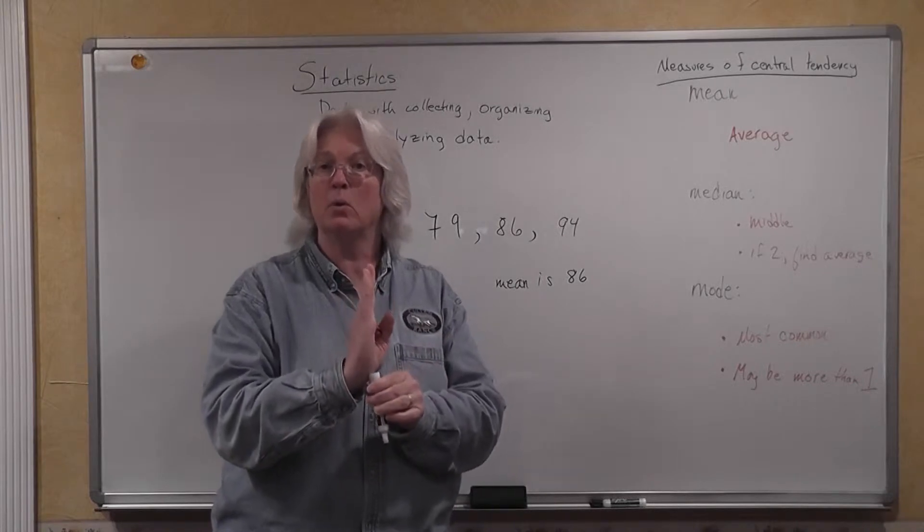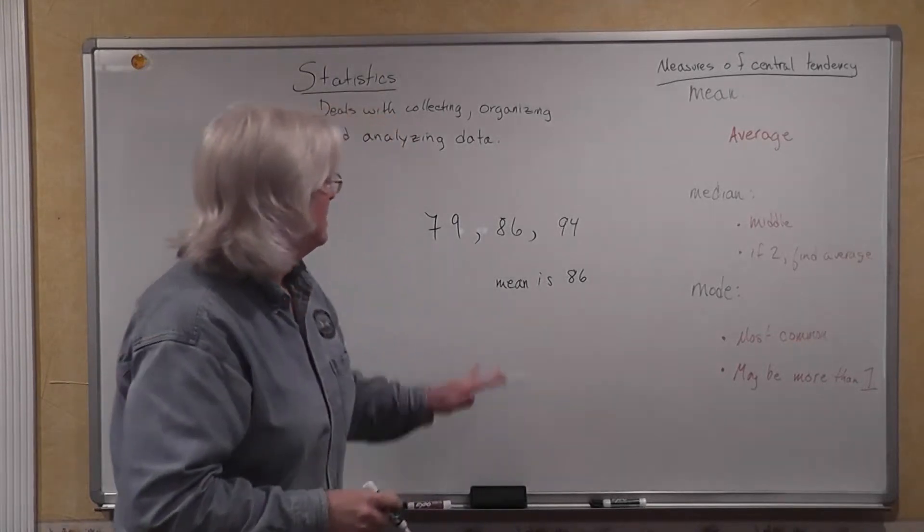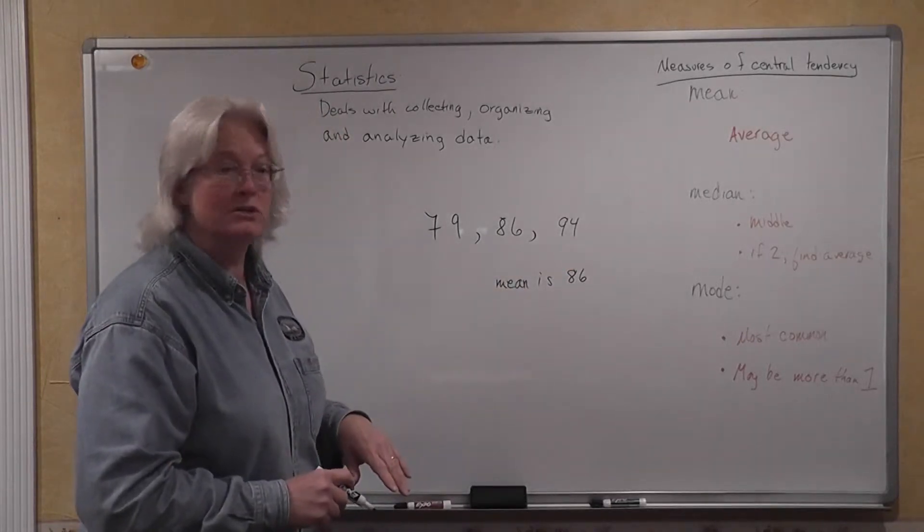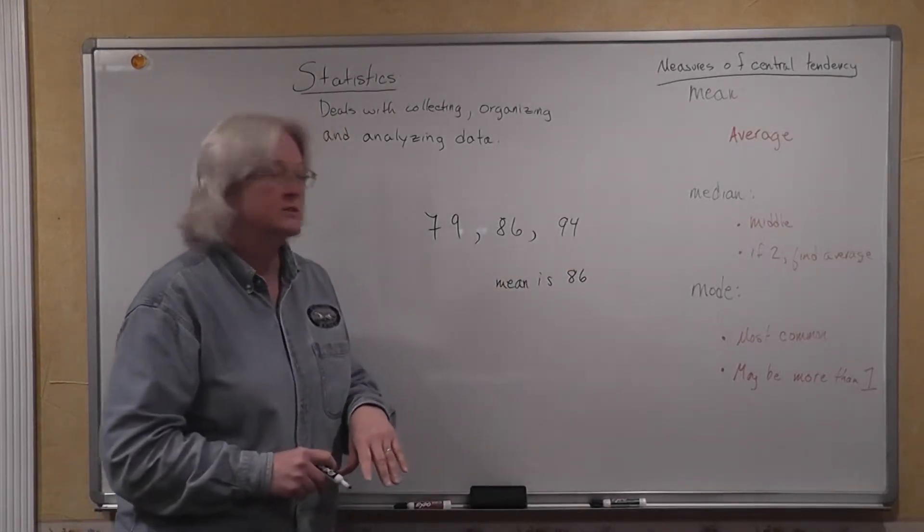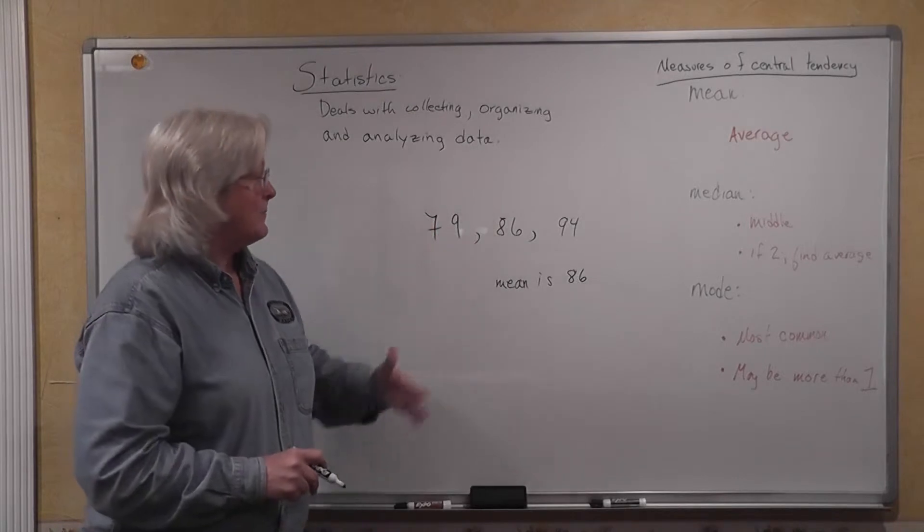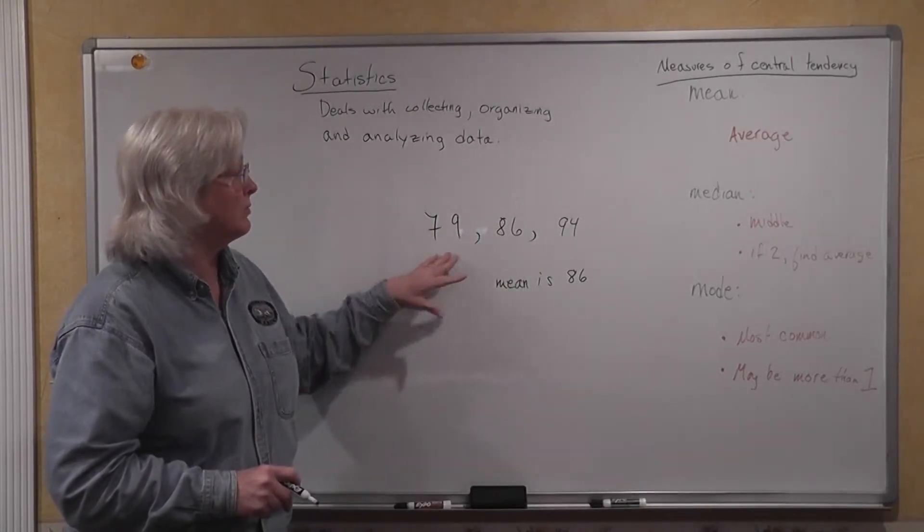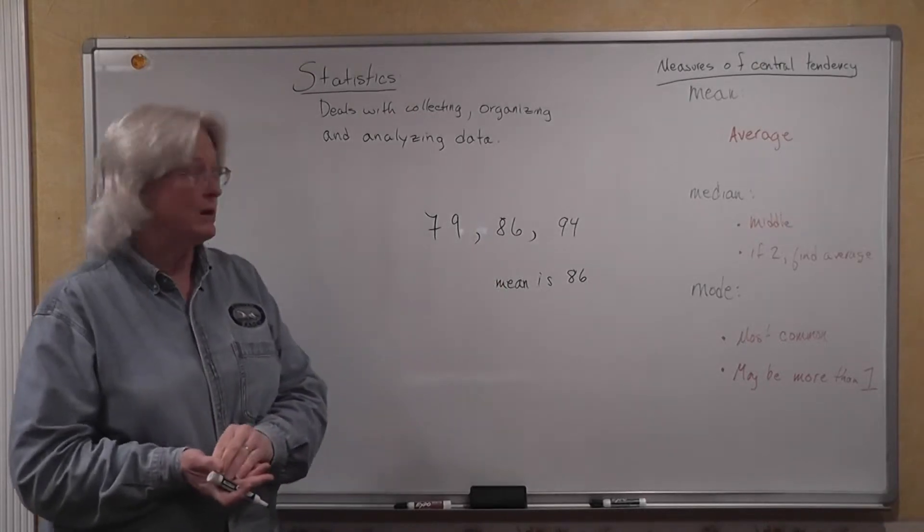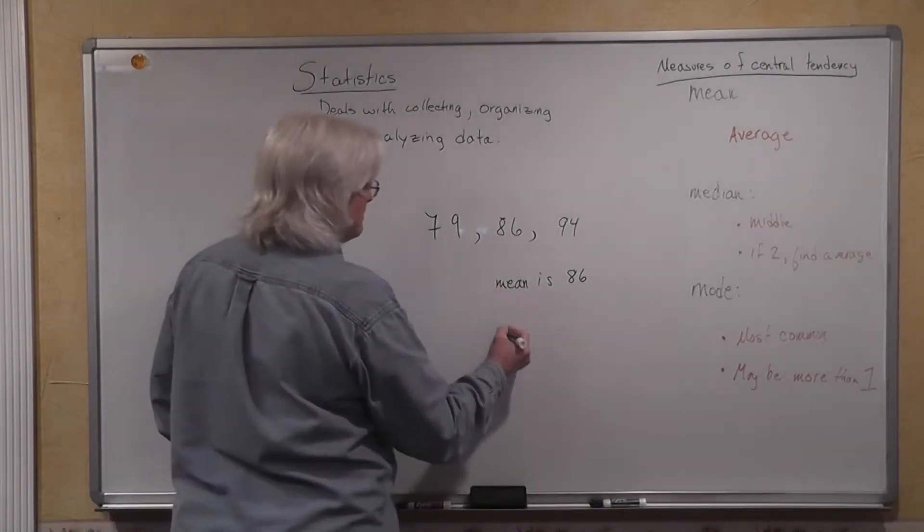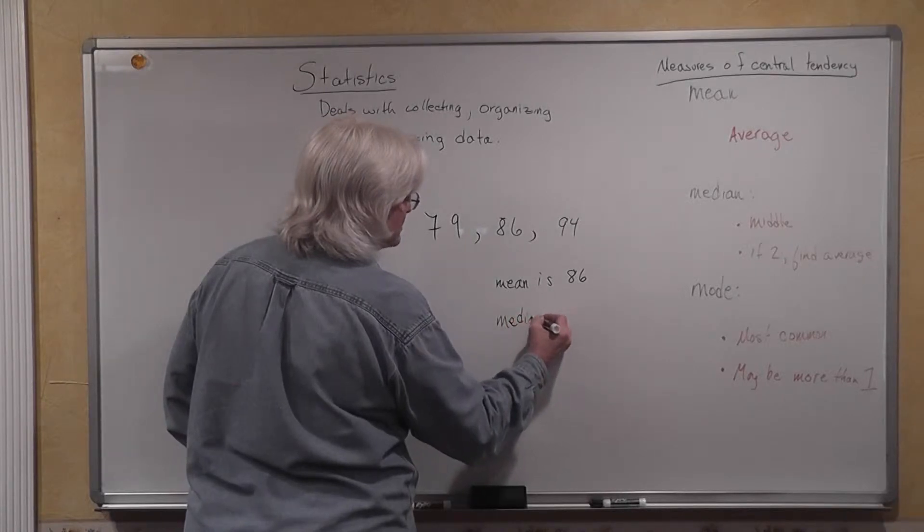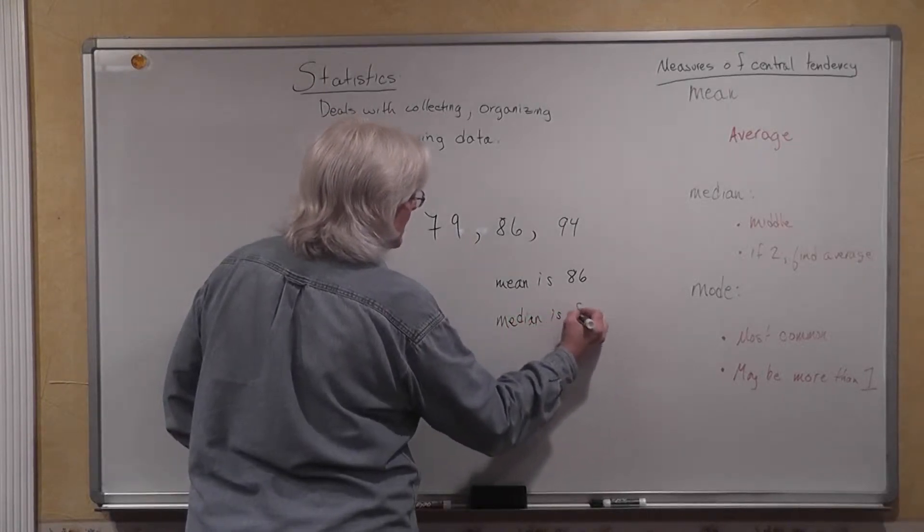Or it's like finding that balancing point of a seesaw. So we have these three numbers here, these three scores, 79, 86, and 94. I happened to go ahead and arrange those in numerical order already. So the middle number now is the median. So the median of these three numbers is 86 as well.